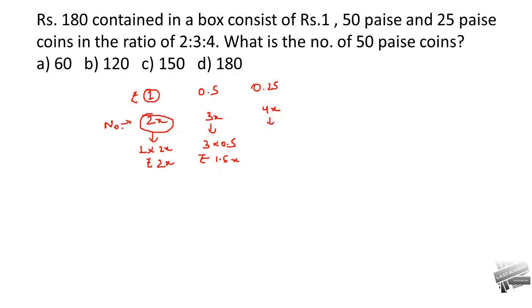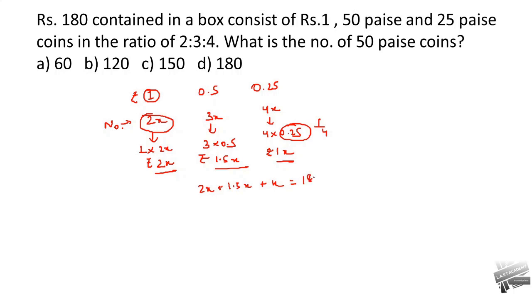Total value: 2x plus 1.5x plus x equals 4.5x equals 180. So x equals 180 divided by 4.5 equals 40. The number of 50 paisa coins is 3x equals 3 multiplied by 40 equals 120. So 120 is the answer.